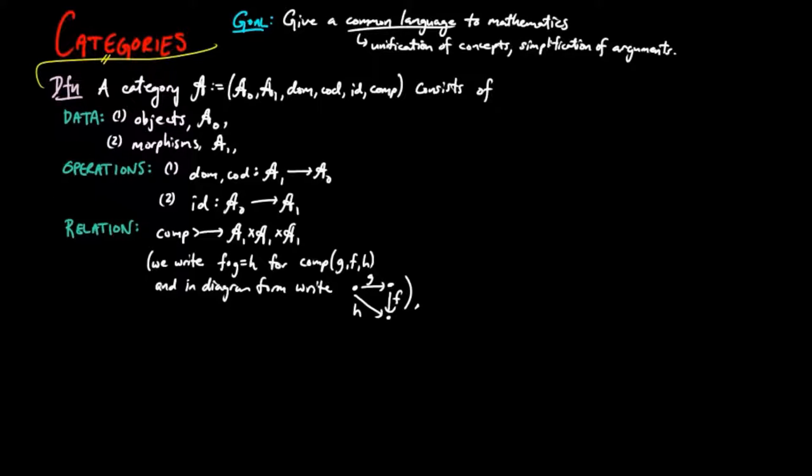And this structure is subject to the following axioms. We have two identity axioms, the first which states that for each A object X, the domain of the identity of X is X, and the codomain of the identity of X is also X.